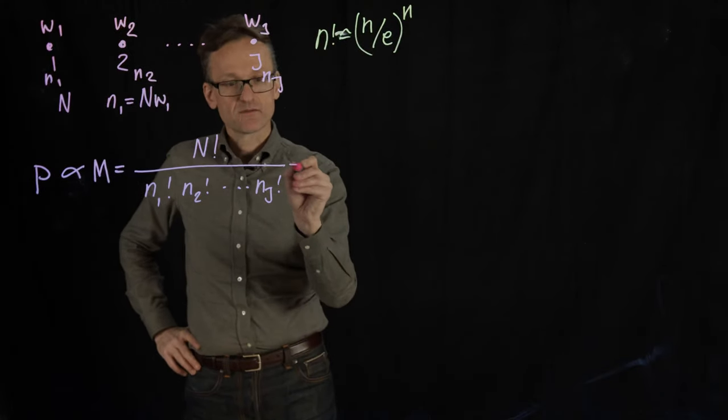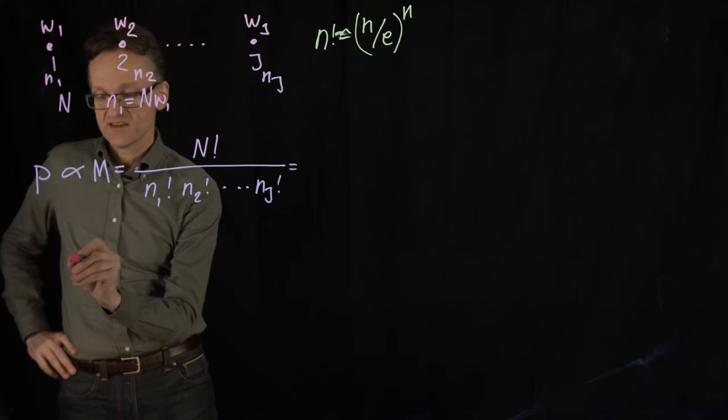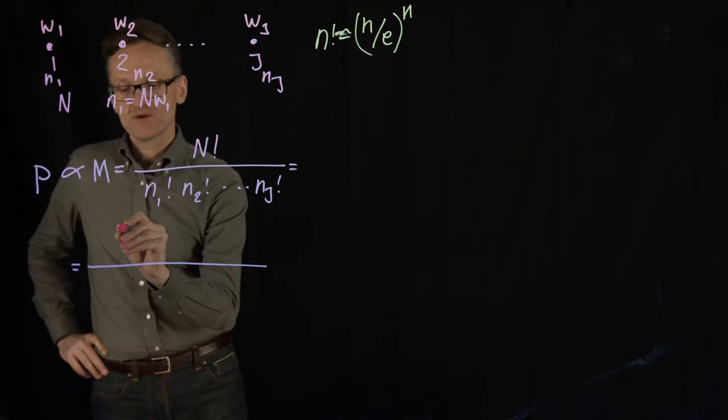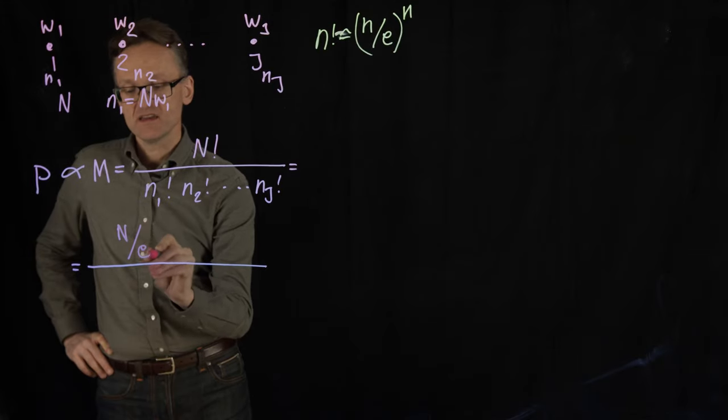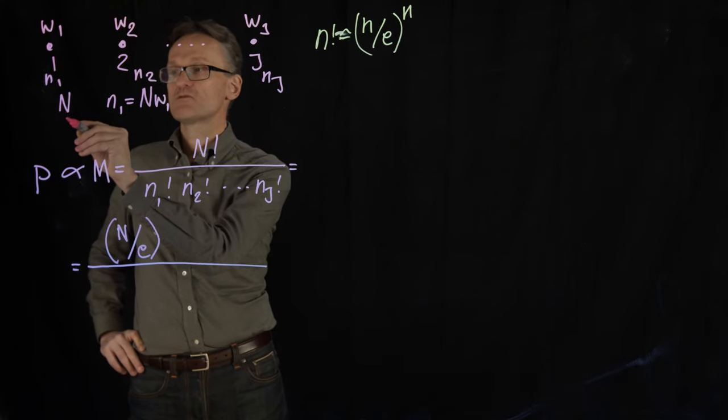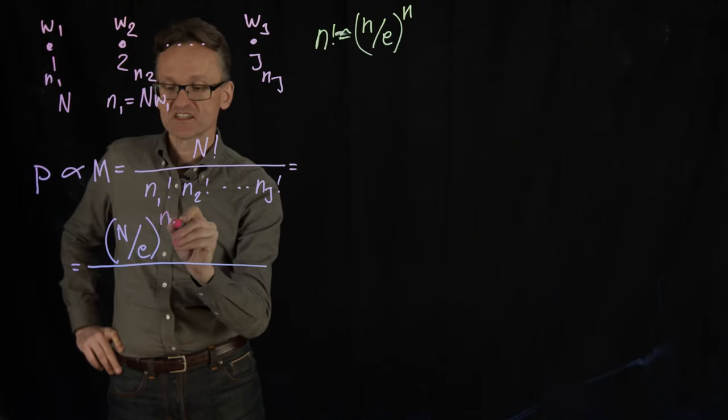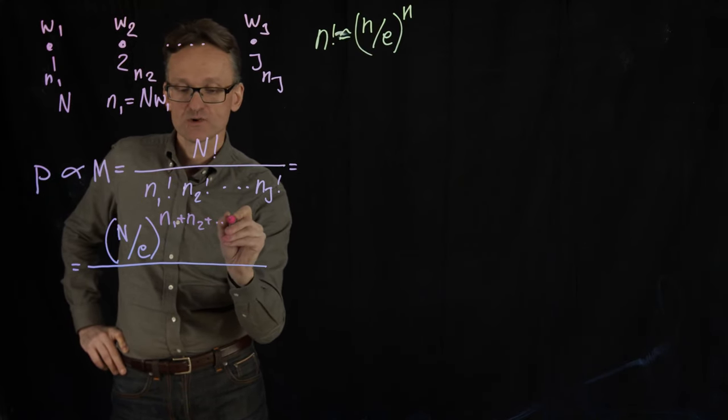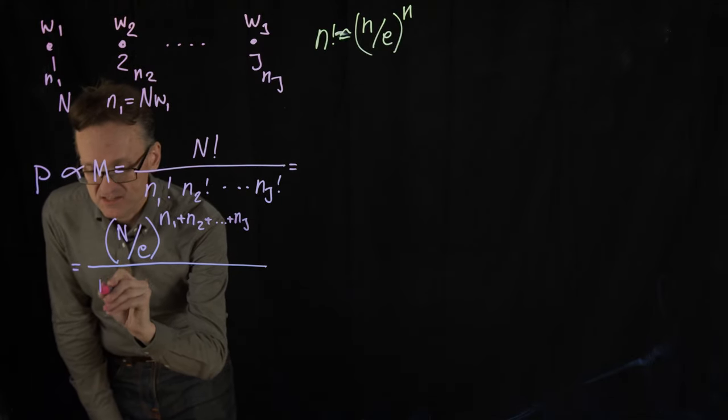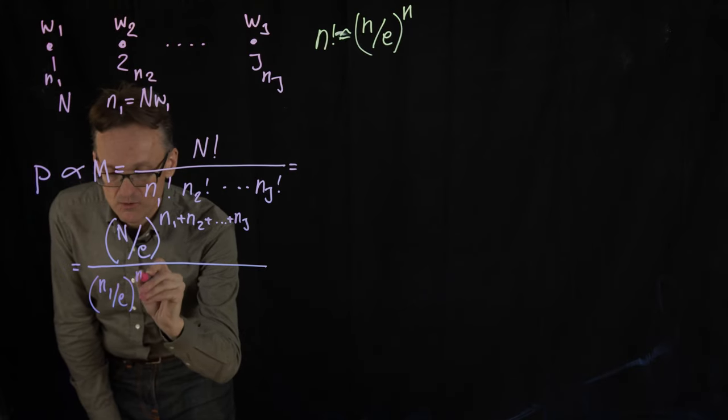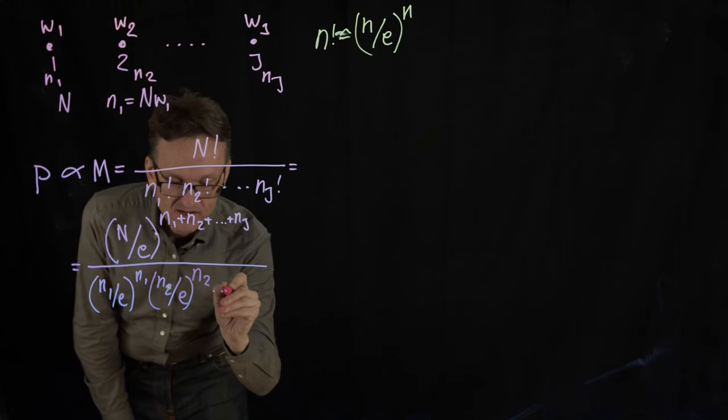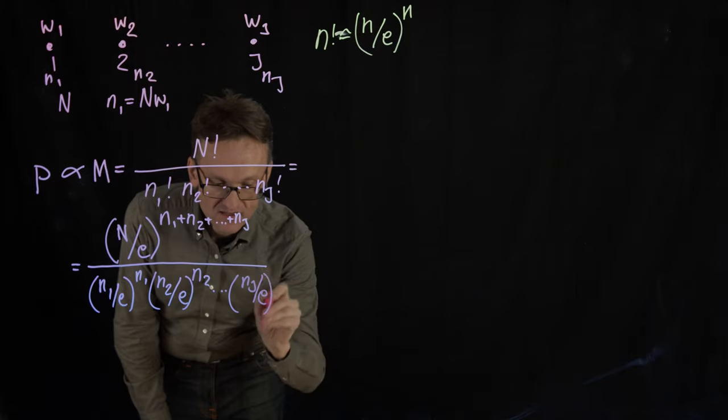And then I can introduce that here. So first, in the numerator, that's going to be uppercase N divided by e raised to the power of uppercase N, but instead of uppercase N, I should be able to write that as the sum of all the lowercase ns. That's going to save me one step. n1 plus n2, etc., plus nj. And then I'll just write out the lowercase ns. And that's going to be n1 divided by e raised to the power of n1, n2 divided by e raised to the power of n2, etc., up to nj divided by e raised to the power of nj.